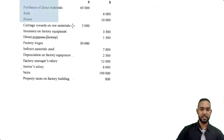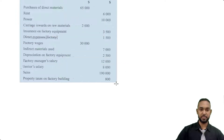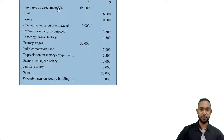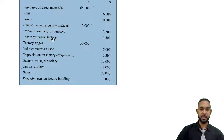They've given us a set of items here: purchases of direct materials, rent, power, carriage inwards on raw materials, insurance on factory equipment, and direct expenses.